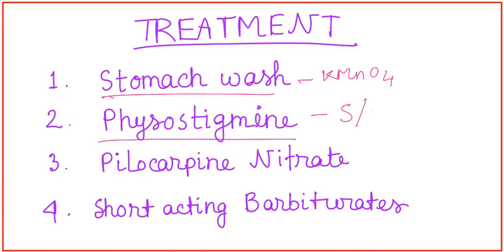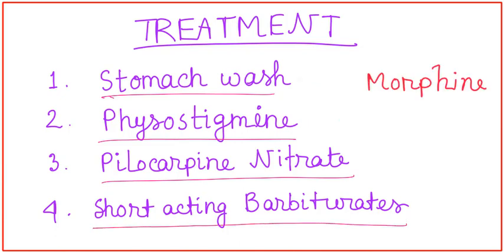which is given subcutaneously. And pilocarpine nitrate is also given. To oppose the effect of delirium, short acting barbiturates may work. But morphine is strictly prohibited in case of Dhatura.